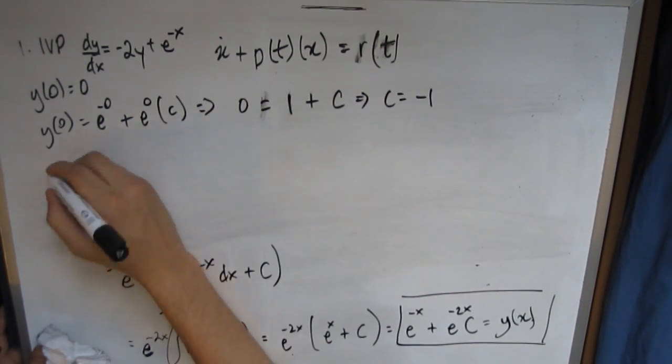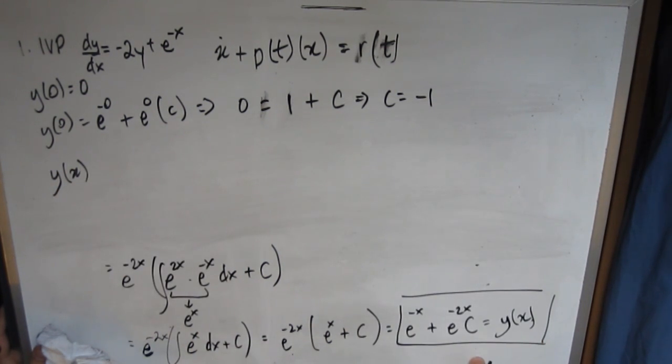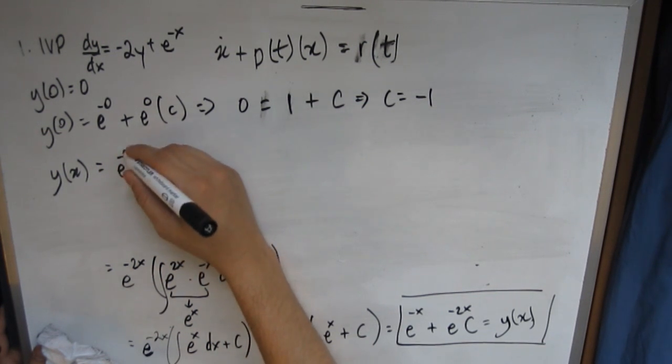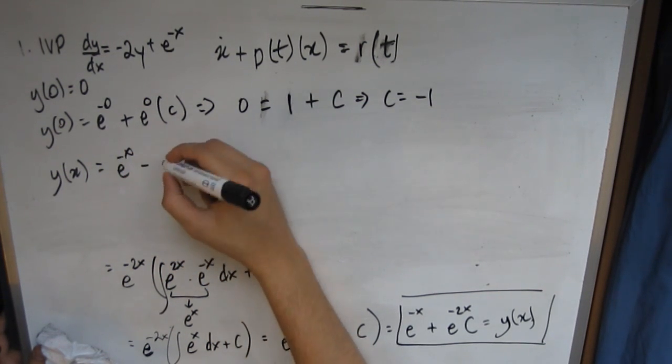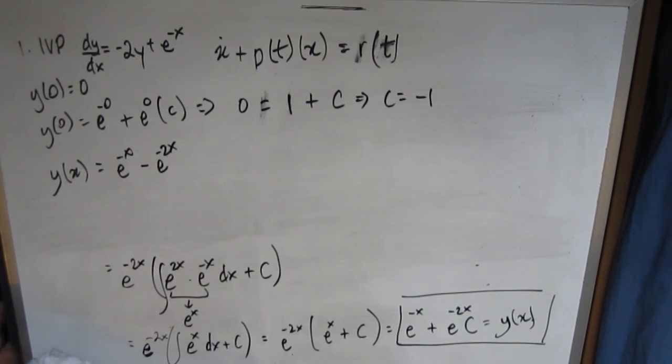Now all we need to do for the final answer would be sub that -1 into the c we have here, which basically gives you the equation of e^(-x) - e^(-2x) as your final equation. That's how you solve question number 1.